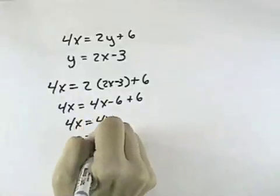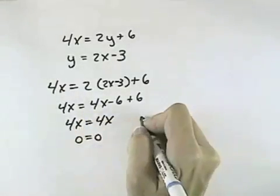Subtracting 4x from both sides, I get 0 equals 0. This means there's infinitely many solutions.